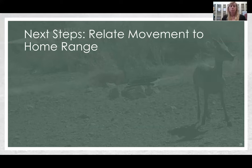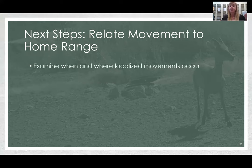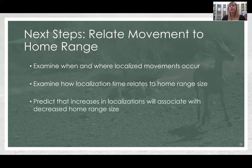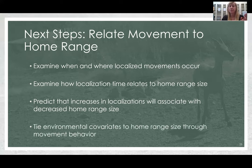To follow up this study, we want to relate movements to home range and variation in home range size from year to year. We want to examine when and where localization movements occur, as well as how localization timing relates to home range size — predicting that increases in localizations will be associated with decreases in home range size. We then want to tie the environmental covariates driving increased localization duration and frequency to changes or decreases in home range size.